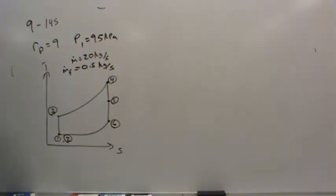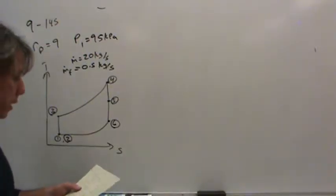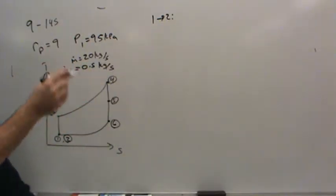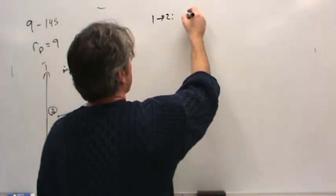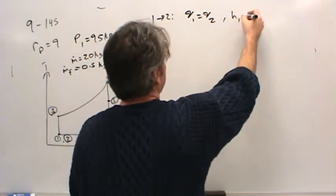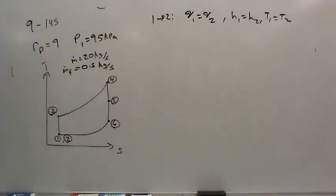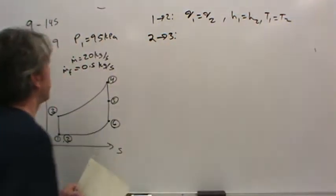If we neglect the diffuser, state 1 and state 2 is the same thing. That means the kinetic energy of state 1 and state 2 would be the same also. To move from state 1 to state 2, a lot of times what you have to do is walk around the entire cycle diagram. V1 is V2 and H1 is H2 and T1 is T2. They're the same state.